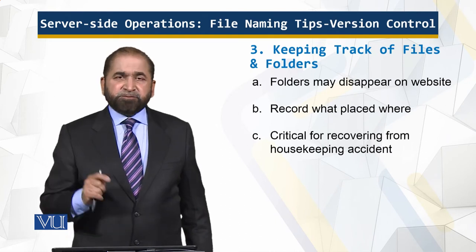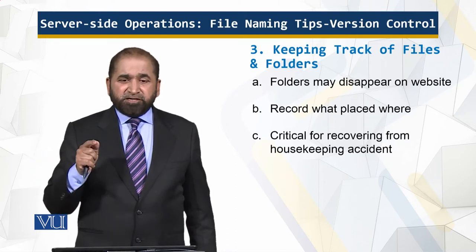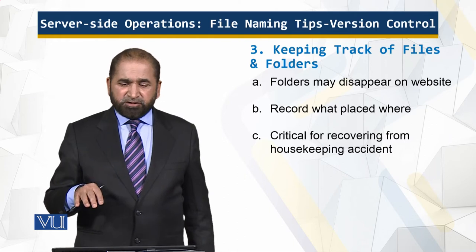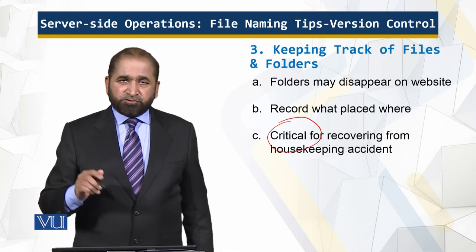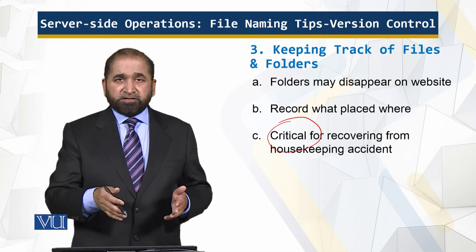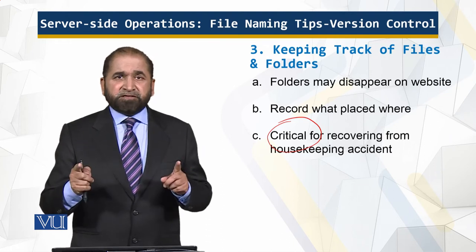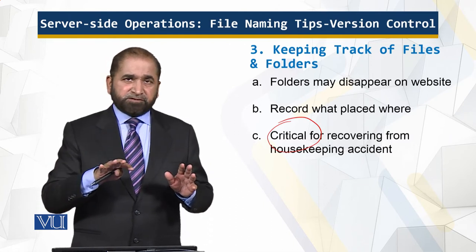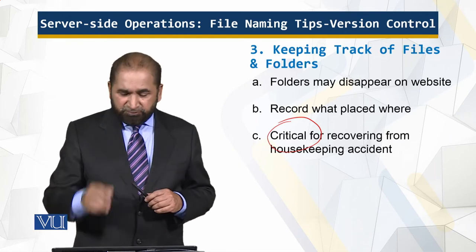Keeping track of files and folders — folders may disappear on a website where they are loaded. It has happened and it can happen to you also. What you need to do is record what is placed where, and keep that record in a database on your own computer. It is critical for recovering from accidental housekeeping activities. Keep a backup of what was placed where, and also a backup listing of what was actually there. One is the structure record, and the other is the backup covered in the previous module. You have to be careful because you may accidentally make a deletion.